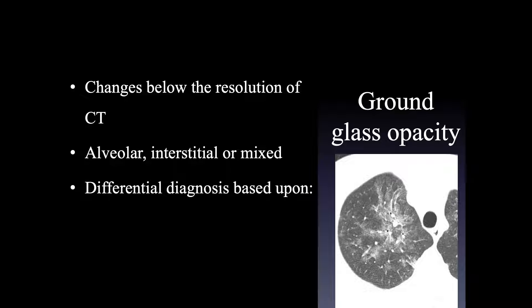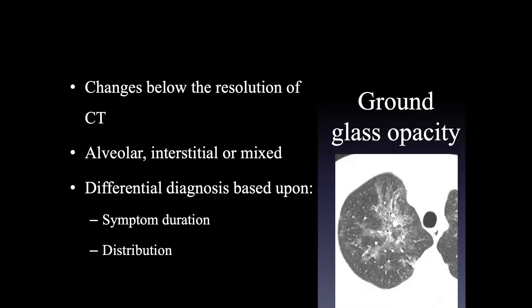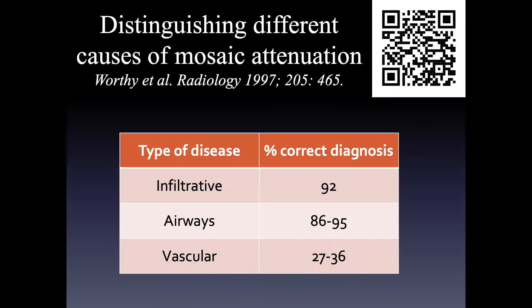The differential diagnosis for ground glass opacity is primarily based on symptom duration, either acute or chronic, the distribution within the lungs, and any associated findings.